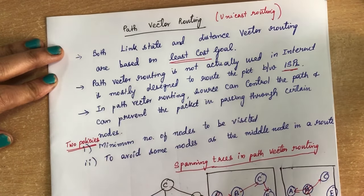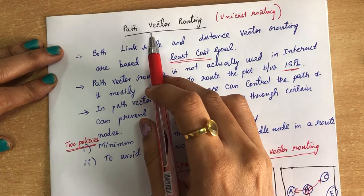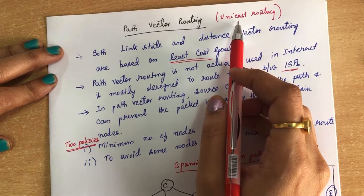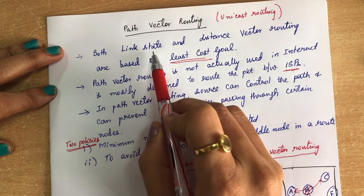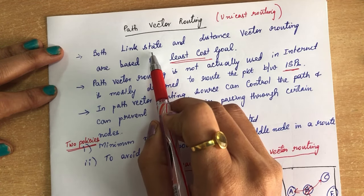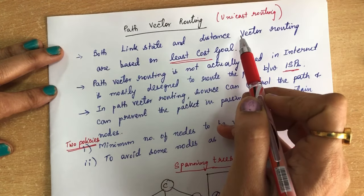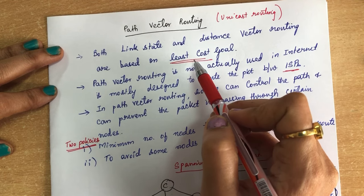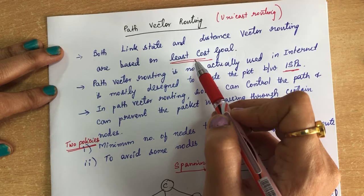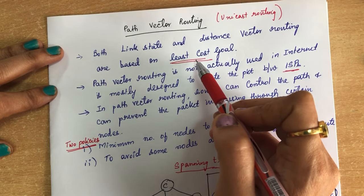Hello everyone. Today we are going to see a new topic: path vector routing, which is one of the unicast routing methods. In previous lectures we have already seen link state and distance vector routing. Both of those routing methods are based on the least cost method, where we find the shortest path based on the total least cost.